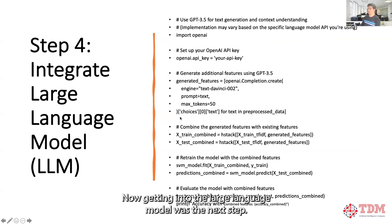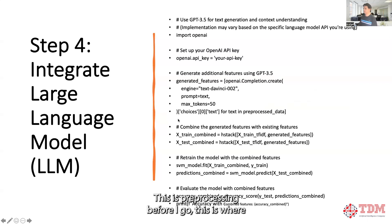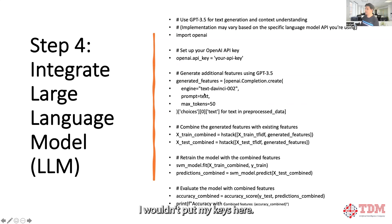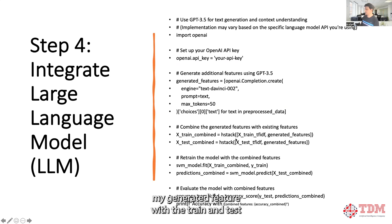Getting into the large language model was the next step. This is pre-processing before I go. This is where I'm able to connect to OpenAI — I haven't put my keys here — and then I used the open-source text-davinci-1.002, connected that pre-trained model, gave it a 50-token limit, and was able to combine my generated features with the train and test sets and fit the model again to measure accuracy.